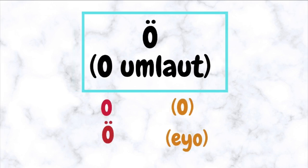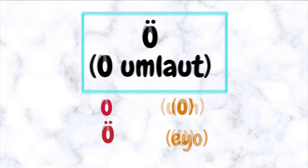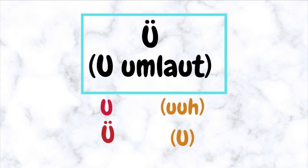Now for the special German letters. Ä (A umlaut) — it is pronounced as 'ill.' Ö (O umlaut) — it is pronounced as 'you' (ü sound). These are two of the four extra letters in German.